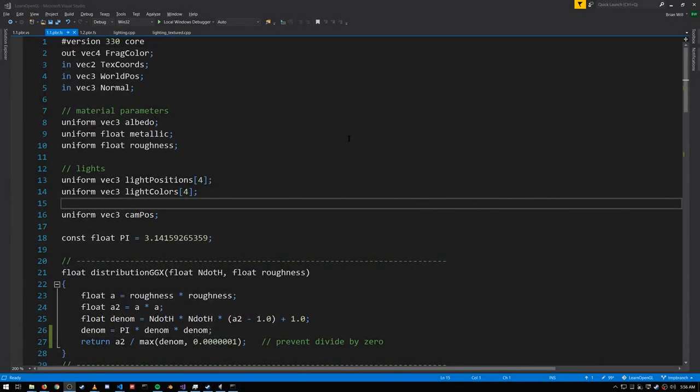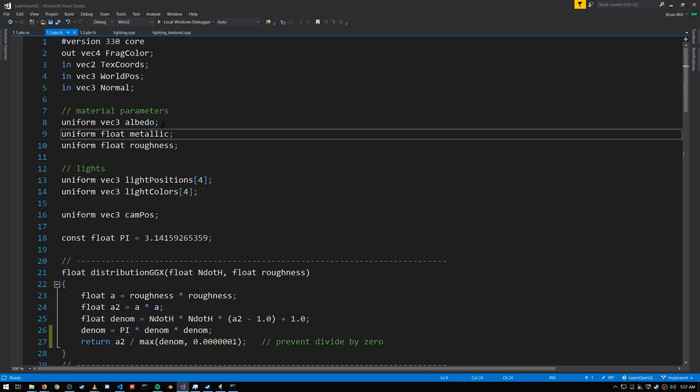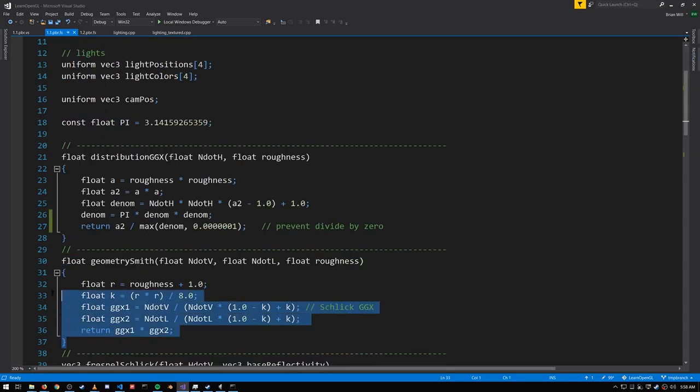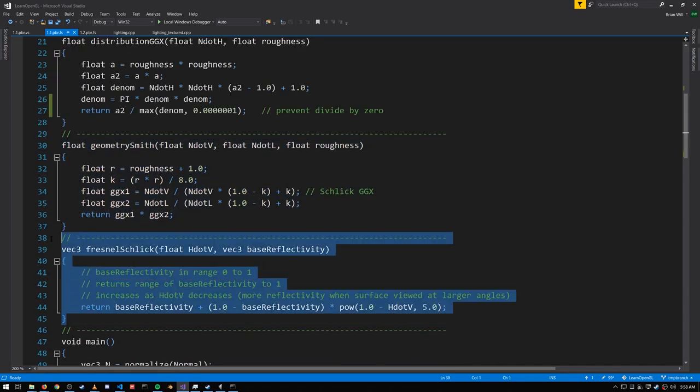Looking finally at the shader code, for each of the spheres, we use the same albedo color, but we're using different roughness and metallic parameters. This function here is our normal distribution function. It's just the formula translated into code. Here's the Smith's method formula translated into code, and here's the Fresnel-Schlick approximation.